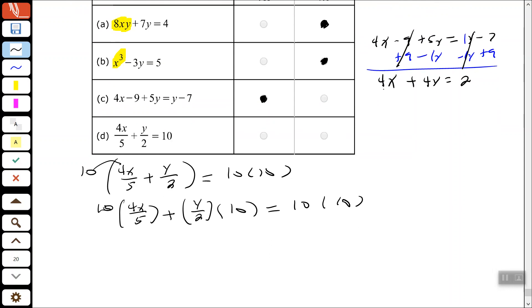So, we see that 5 goes in the 10 2 times, 2 times 4x is 8x. 2 goes in the 10 5 times, 5 times y is 5y. And then 10 times 10 is 100. So, yes, this is in the form of Ax plus By equals C.